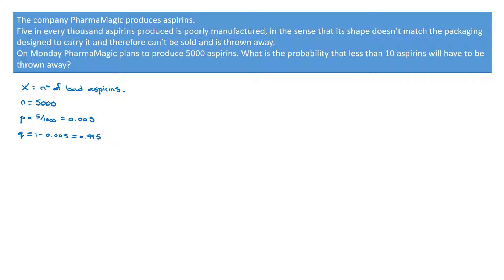We're interested in there being less than 10 aspirins which need to be thrown away, so the probability we're looking for is P(X < 10). Since X can equal 0, 1, 2, ... up to 5000, for X to be less than 10 means we're looking for X less than or equal to 9, so the probability of interest is P(X ≤ 9).